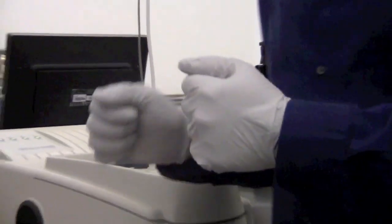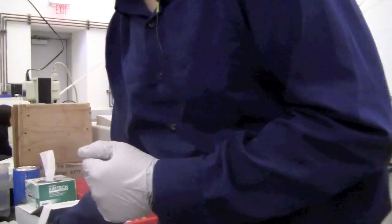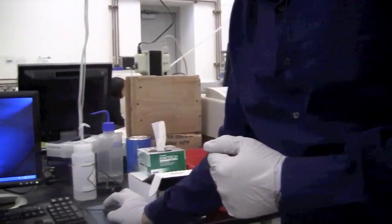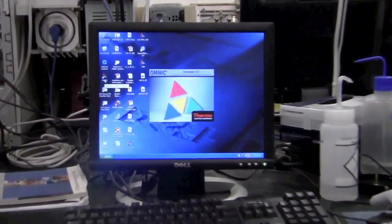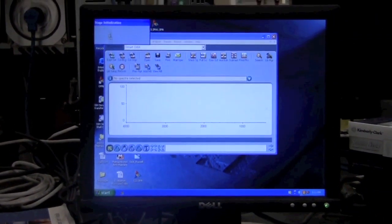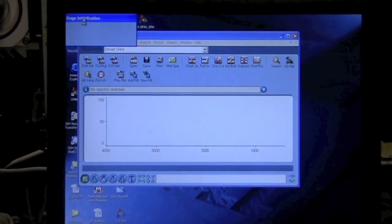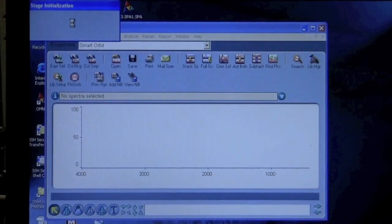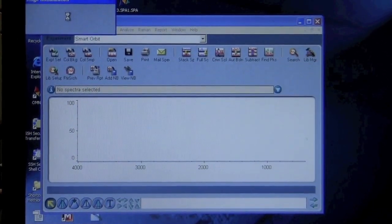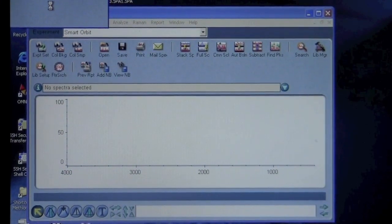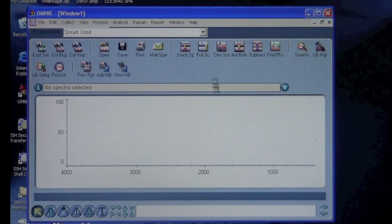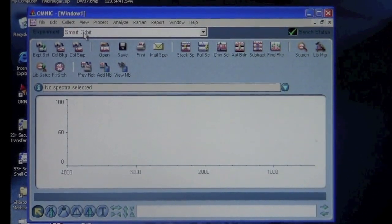Next, you can come over to the software and start the software, which is called OMNIC. You should be able to start it by double-clicking on the OMNIC icon. It'll bring up a screen saying stage initialization, meaning it's trying to recognize which accessory is loaded into the instrument. It should recognize that the Smart Orbit is loaded and show this screen with Smart Orbit here.